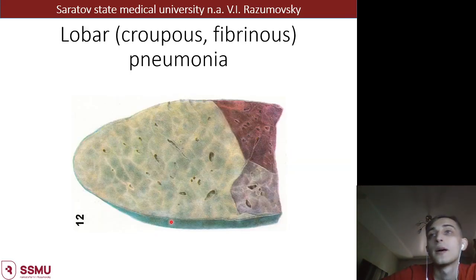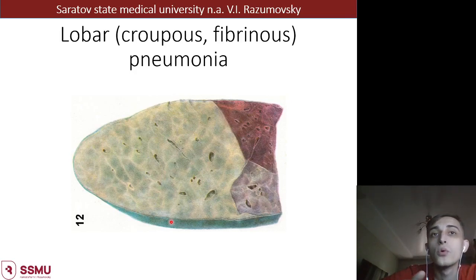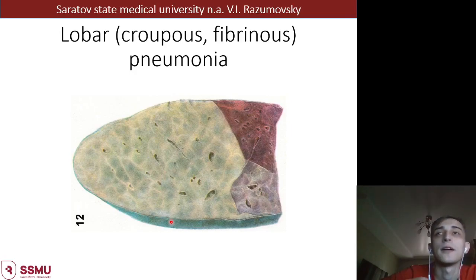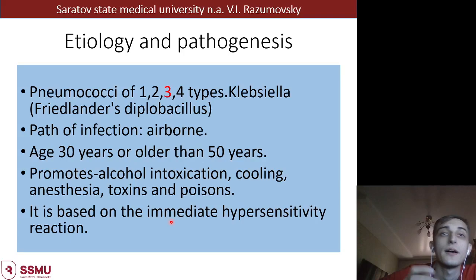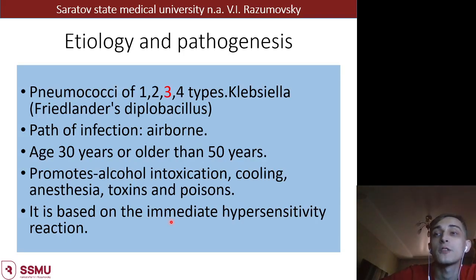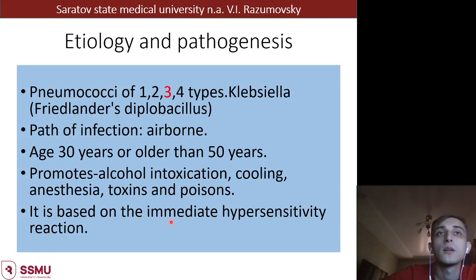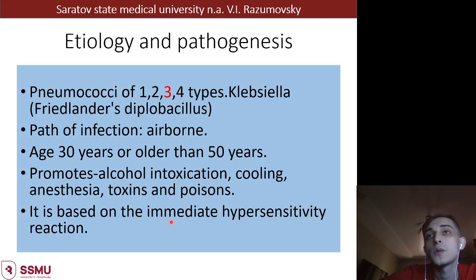Lobar pneumonia has a lot of different names - it may be called lobar pneumonia, croupous pneumonia, pleural pneumonia, or large-size pneumonia. The typical manifestation is changes over a huge area of lung tissue. It is an infectious disease, mostly associated with bacteria - for example, Pneumococcus of all types, most typically Pneumococcus type III, and also Klebsiella infections. The typical way of spreading is airborne.